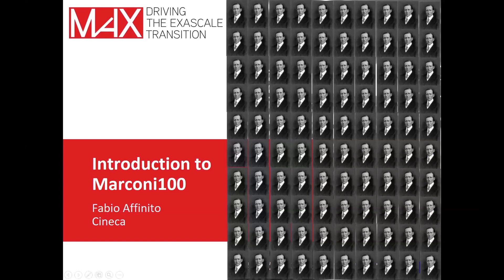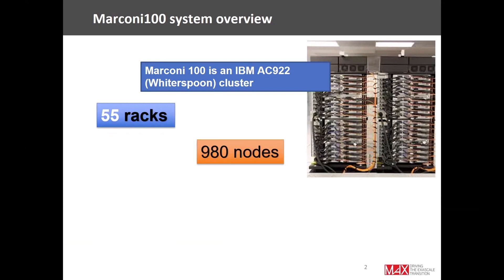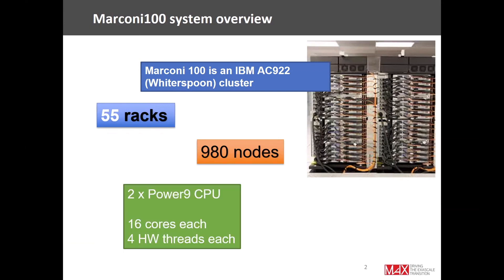This is not actually Marconi 100 in the picture, but it is a very similar cluster. It is an IBM cluster with codename Weatherspoon. Our installation is composed of 980 nodes. Each node has two IBM Power9 CPUs, each CPU has 16 cores, and each core has four hardware threads, as we will see in more detail later.